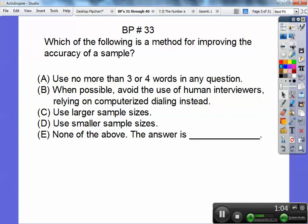Which of the following is a method for proving the accuracy of a sample? Using no more than three or four words in any question? That doesn't sound right. When possible, avoid using the human interviewers relying on... That's not right either. Use a larger sample size. That one will always improve the accuracy. So it's choice C.